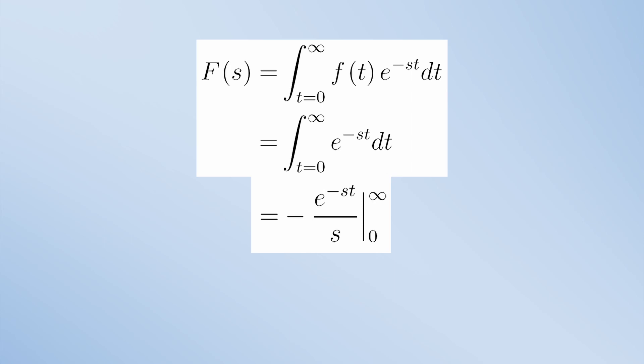Now you just apply the limits on time t. When time goes to infinity, this exponent shrinks and goes to 0, so you're left with substituting time equal to 0. The final result is 1 over s, which is defined everywhere except when s is equal to 0.